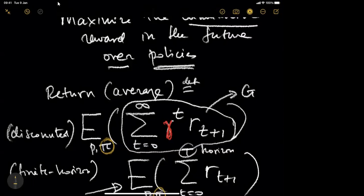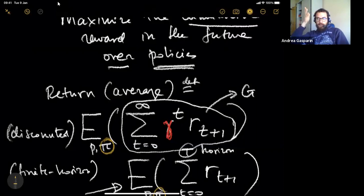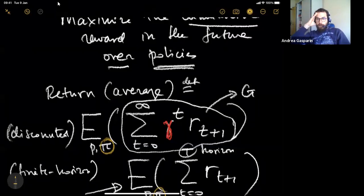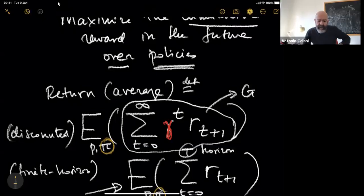A student asks: gamma has to be lower than one, which makes sense when the episode can be infinite. But in practice, when you have a time horizon — say a game that ends after a certain number of steps — in many applications gamma is actually set to one, though literature rarely says this explicitly. The student notes that gamma equal to one would make sense in finite games where you care only about the eventual reward of winning or losing.